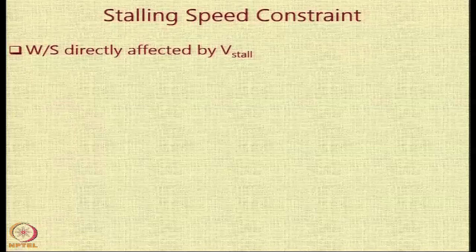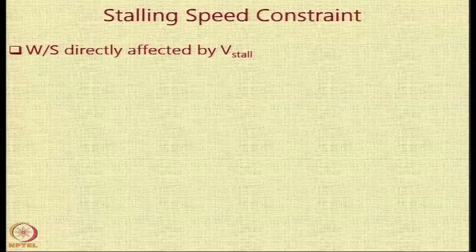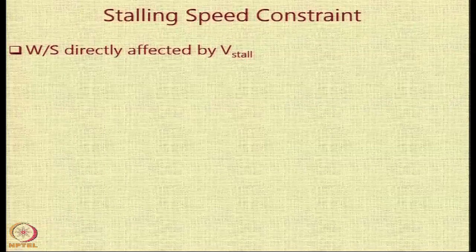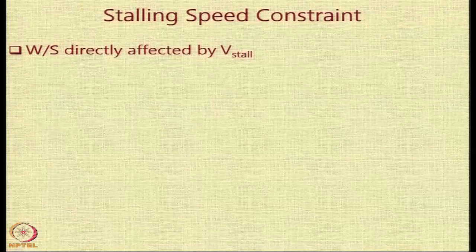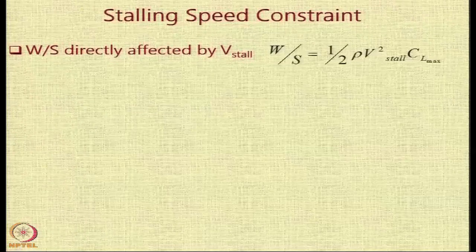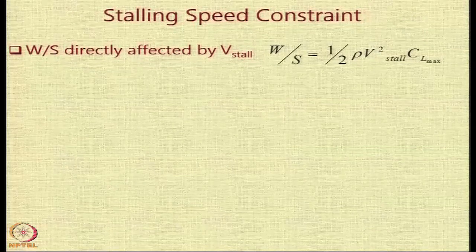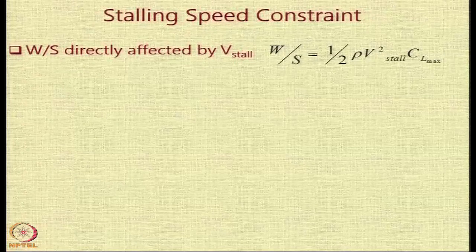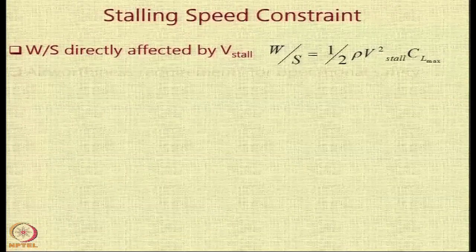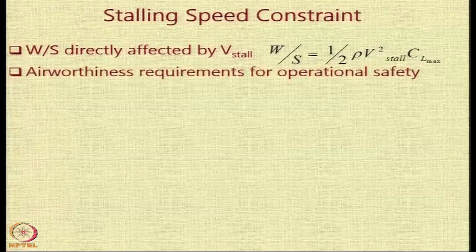The stalling speed constraint is directly affected by V_stall. The W/S value directly gives the value of V_stall that is specified, because W/S equals half rho V² CL_max, where V is V_stall and CL is CL_max. From there one can easily get the value.